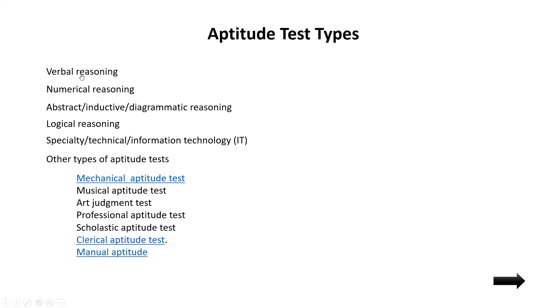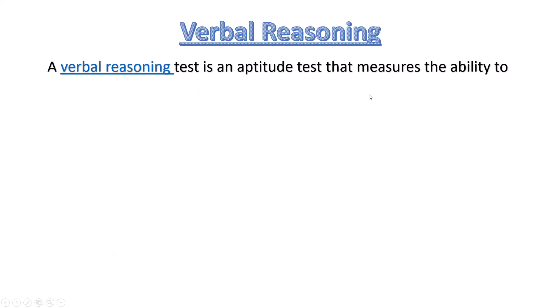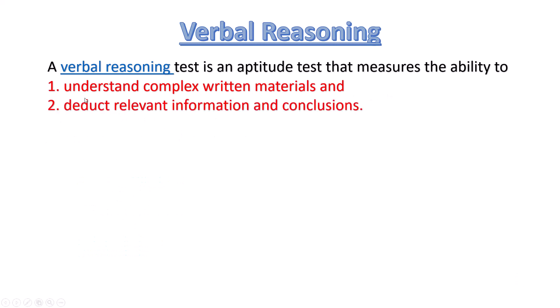Verbal reasoning: this aptitude test measures the ability to understand complex written materials. We can give a paragraph and ask questions from it — the person reads the paragraph and we assess how they derive the answer. A verbal reasoning test measures the ability to understand complex material and detect relevant information and conclusions.